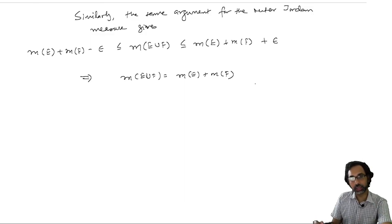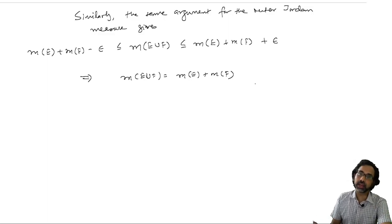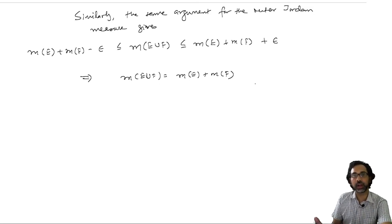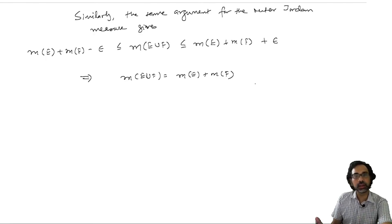We stop our lecture here. In the next class we will see what specific examples of Jordan measurable subsets of R^d we can produce, and we will see that there are plenty of them.